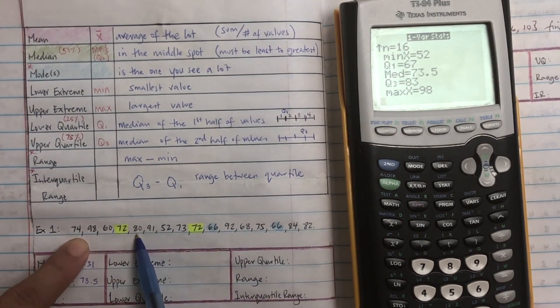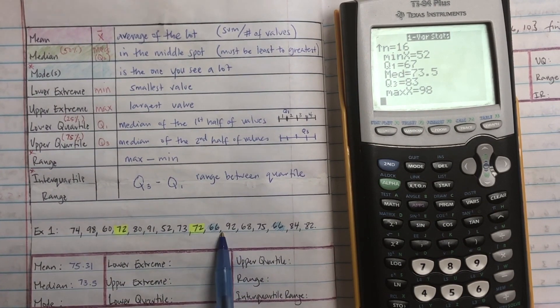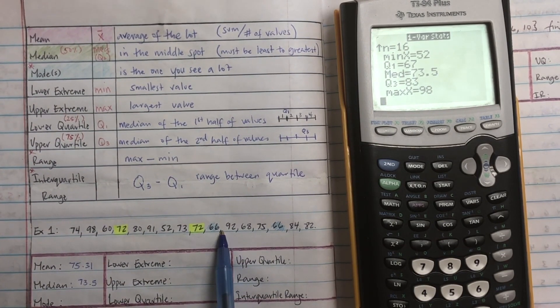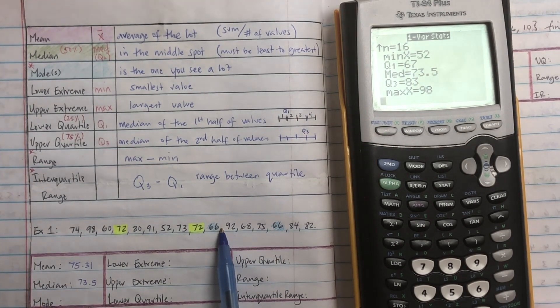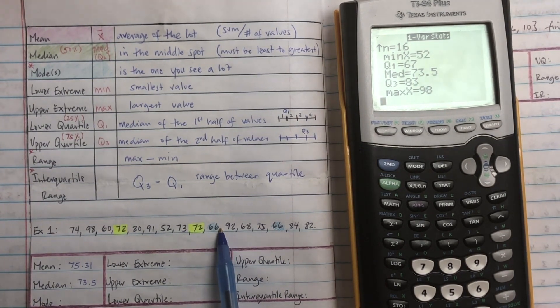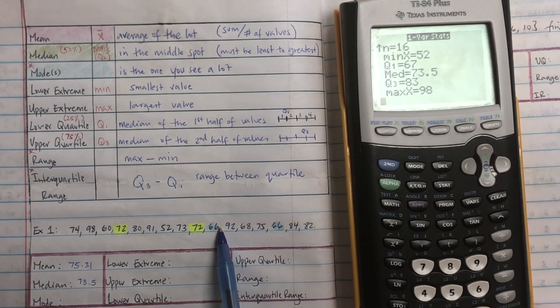All right, then 73, no. 52, no. 91, nope. So that's pretty much it. So it turns out that I have two modes, so that's okay. I can just write those down. So my mode is 66 and 72. Those are the numbers that I see a lot.